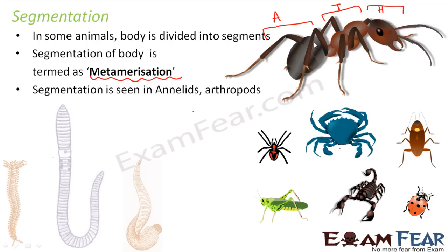Segmentation was also an aspect based on which animals were categorized into different groups, such that all animals that have segmentation fall under the same category, and all animals without segmentation are in another category.